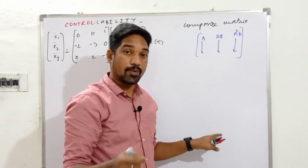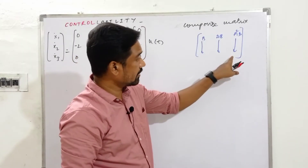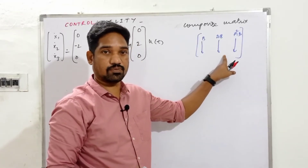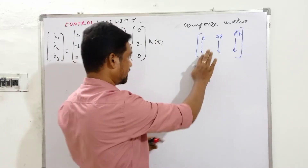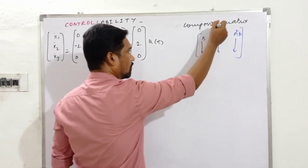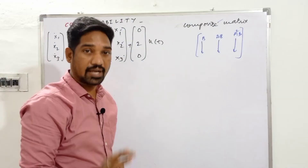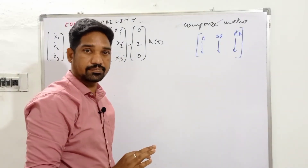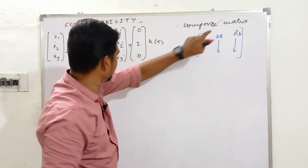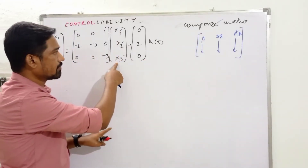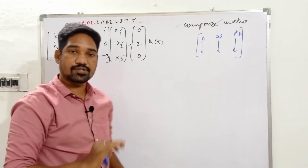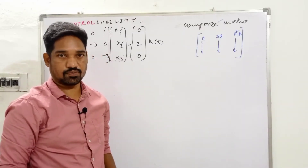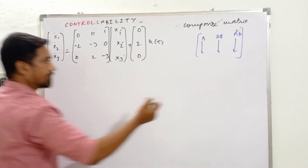To check controllability, we evaluate the rank of the composite matrix by computing its determinant. For this 3×3 matrix, if the determinant is nonzero, the rank is 3. The rank of the matrix being equal to 3 — the number of state variables — confirms complete state controllability.